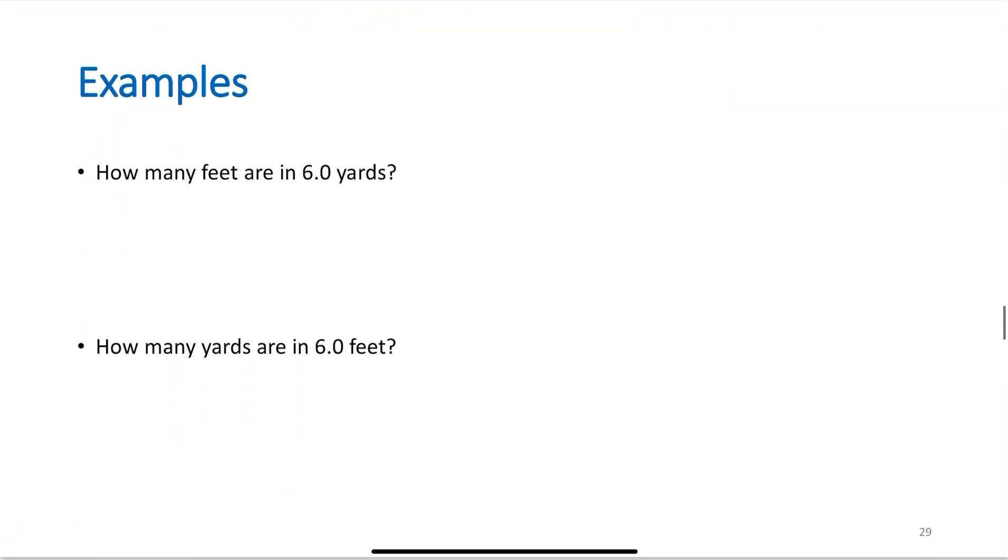To finish up this module, let's work two quick examples. These are easy examples - that's intentional so we can work more difficult examples in class. But let's get the process down. Step one, write down what you're trying to find. Let's read the question: How many feet are in 6.0 yards? I'm trying to find feet and I'm starting with six yards. Number of feet. Write down what you're given - you're told you have six yards. Apply conversion factors to get to your desired units.